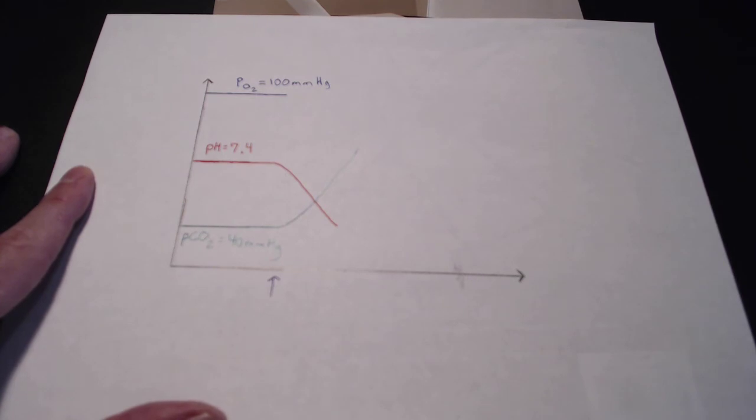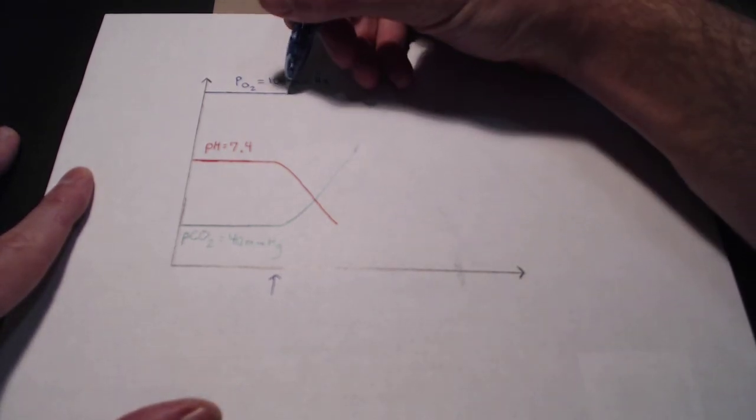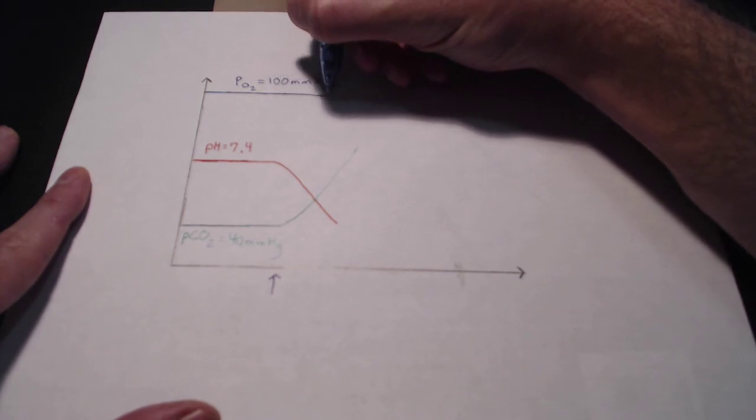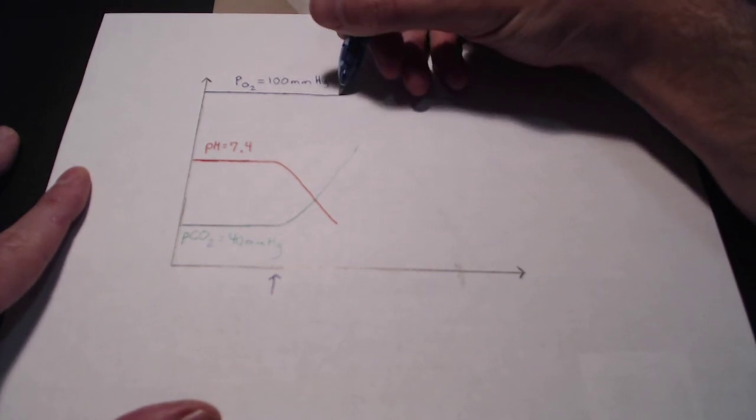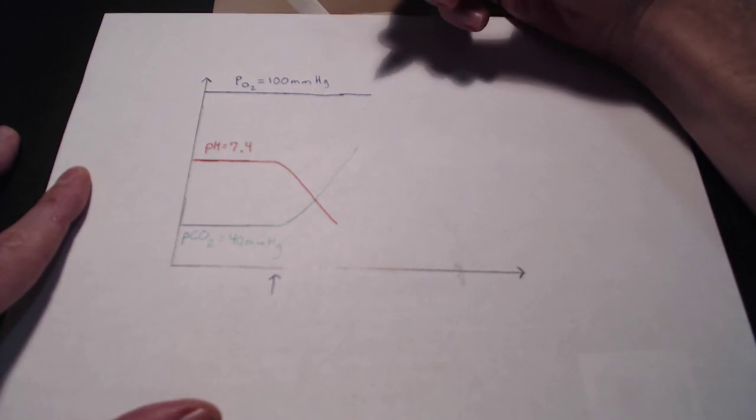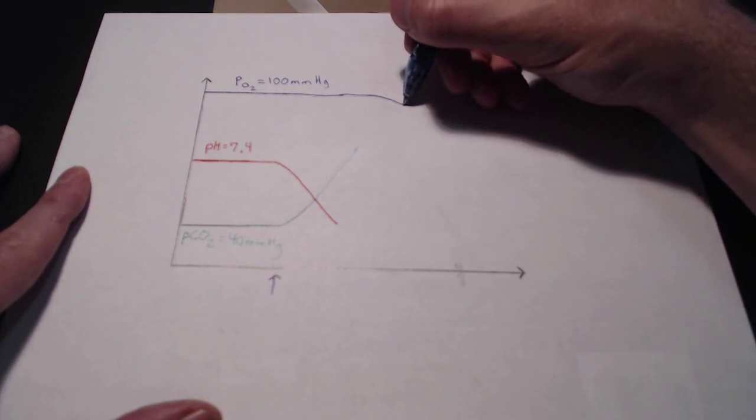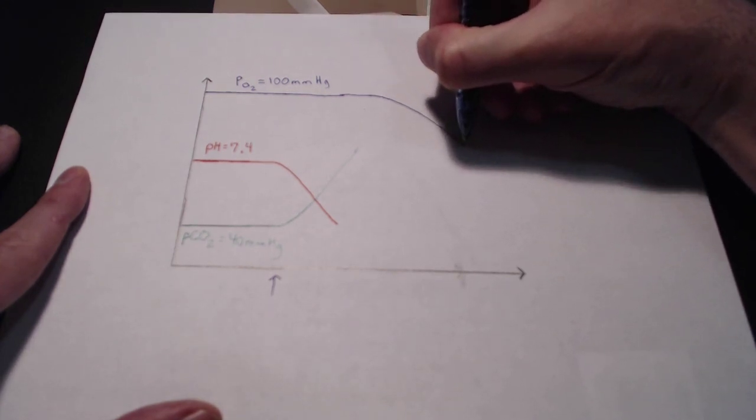So as hemoglobin starts to unload its oxygen, it replaces oxygen that is lost from the blood plasma. So what that means is that even as we hypoventilate, the oxygen level is going to stay pretty constant over time until we really start to tap into those hemoglobin stores of oxygen and then eventually we can expect it to start to come down like this.